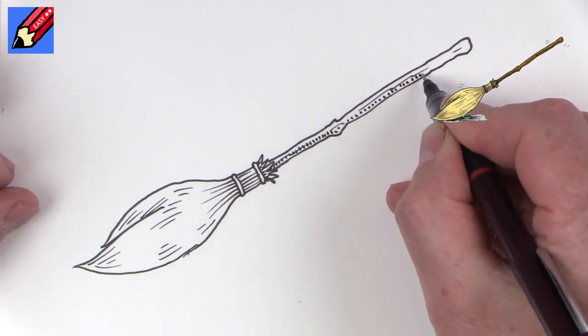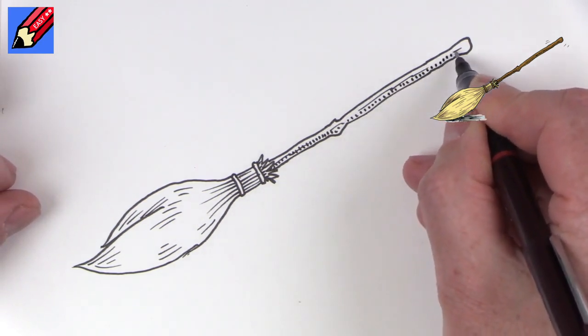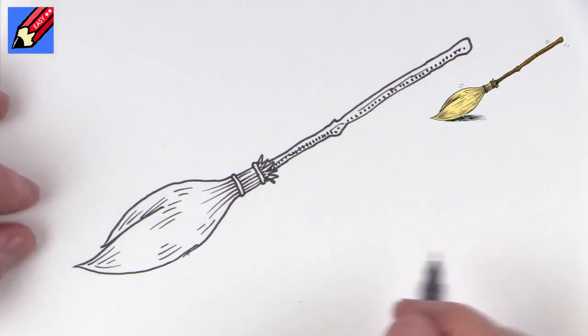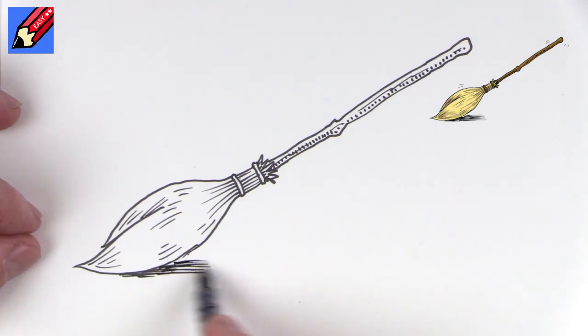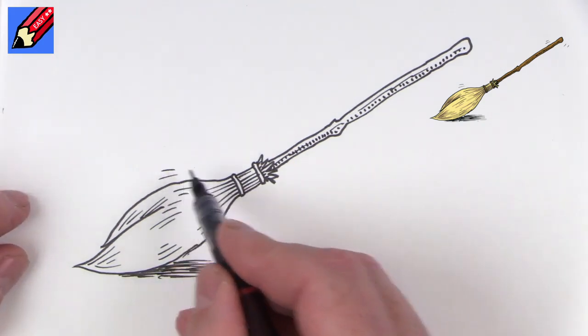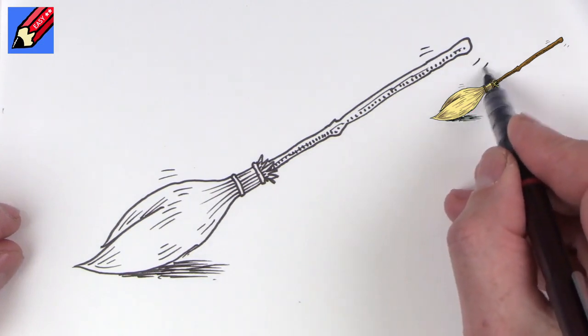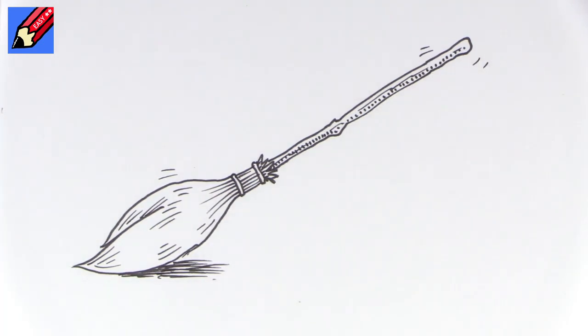And we can imagine that it's sitting on the ground, so we could give it a bit of shadow just sort of down there like that. And if it's a magic broomstick, we can maybe bring it to life a bit with some twitchy marks.